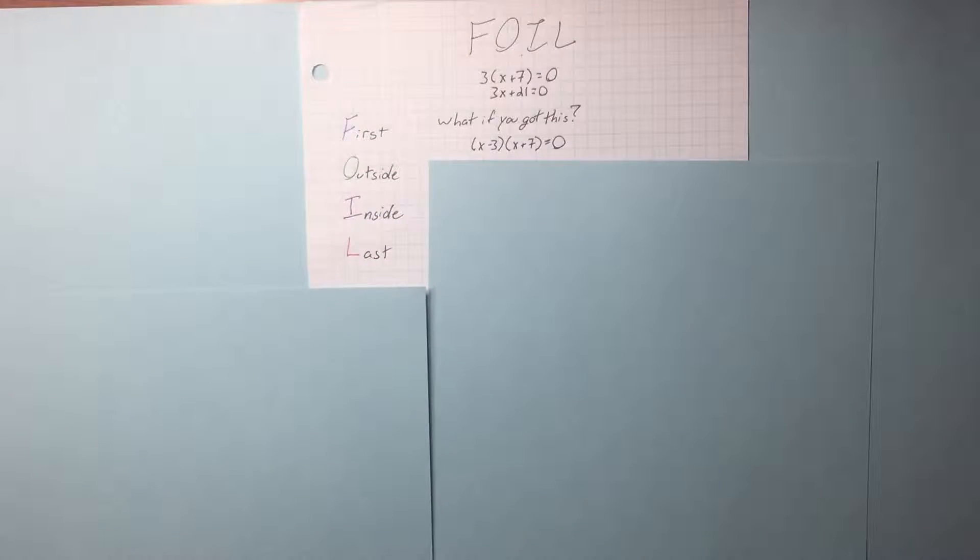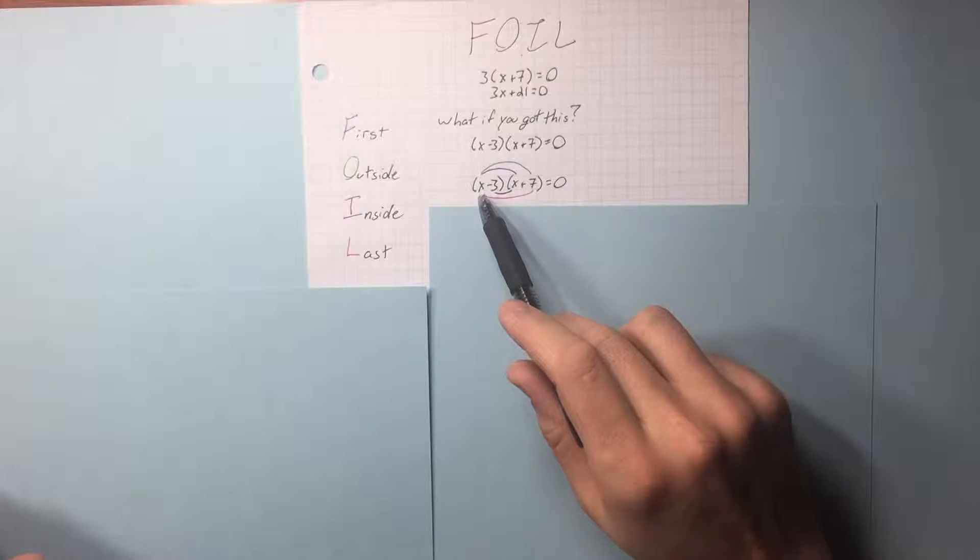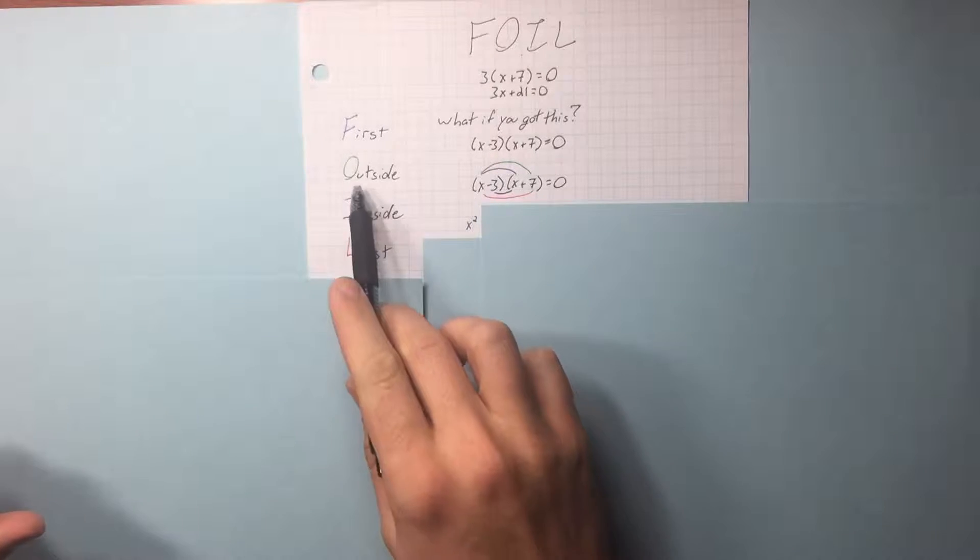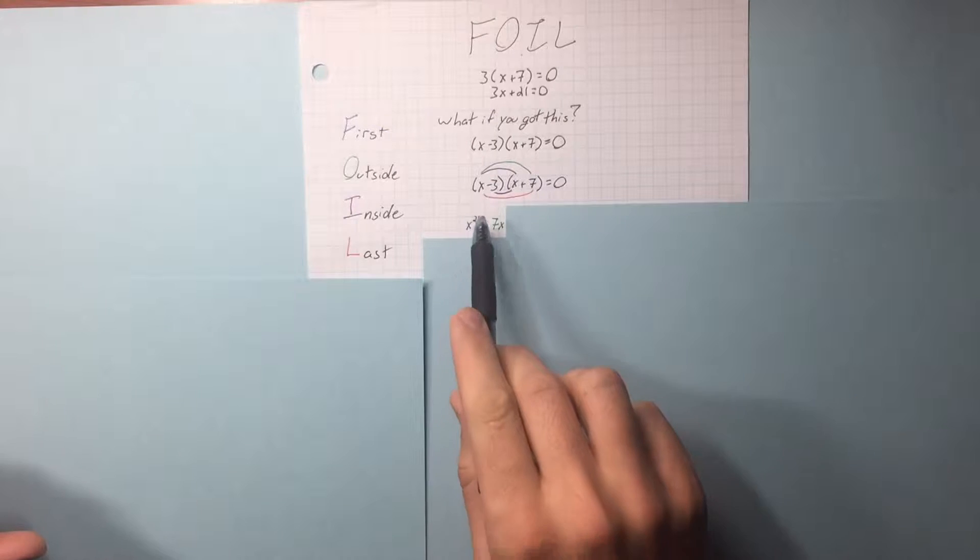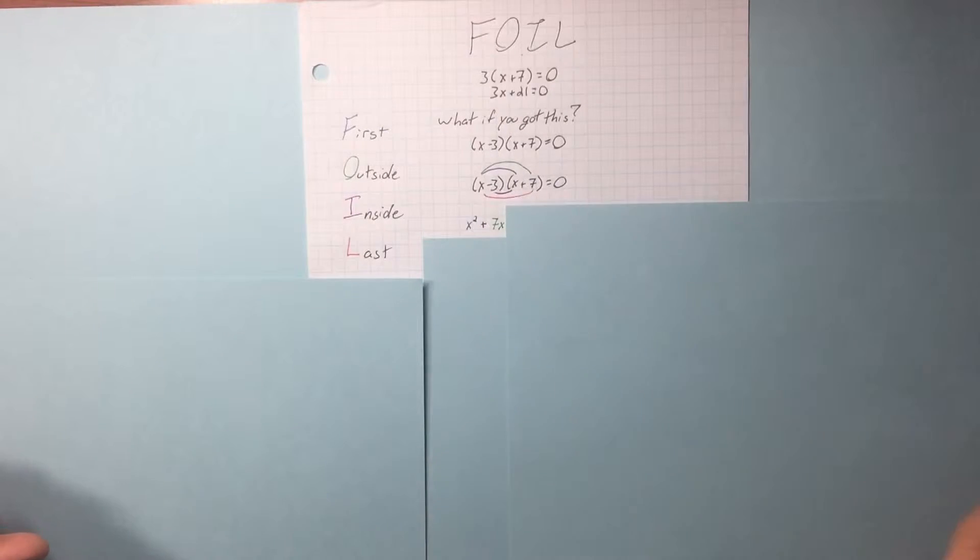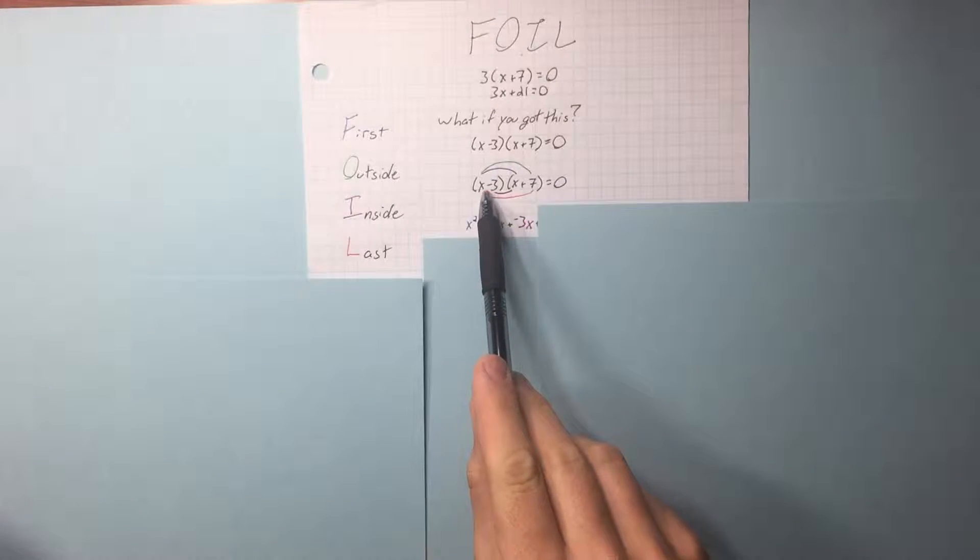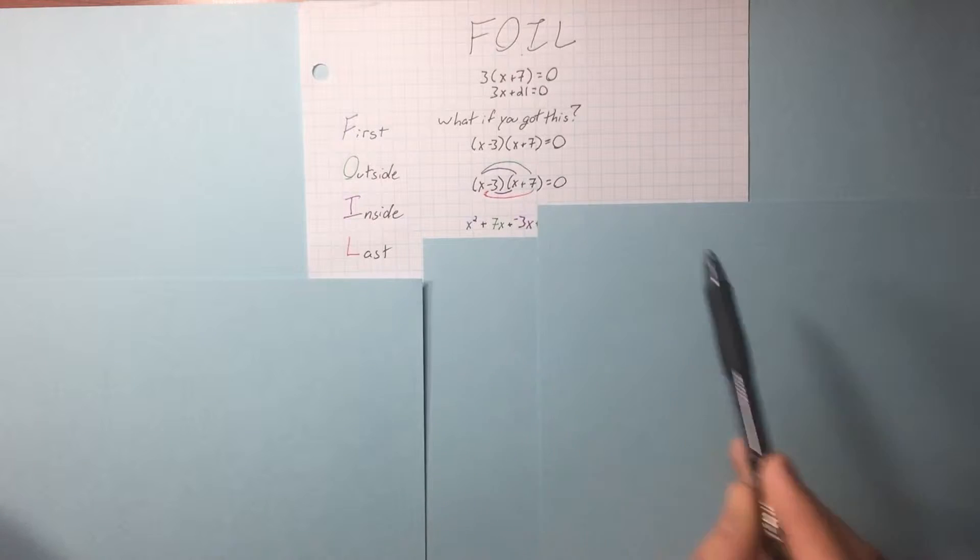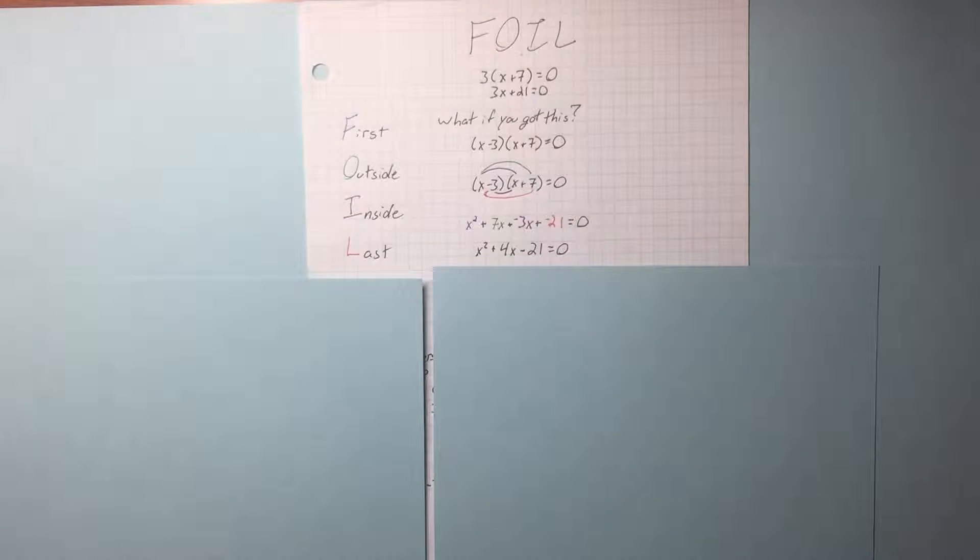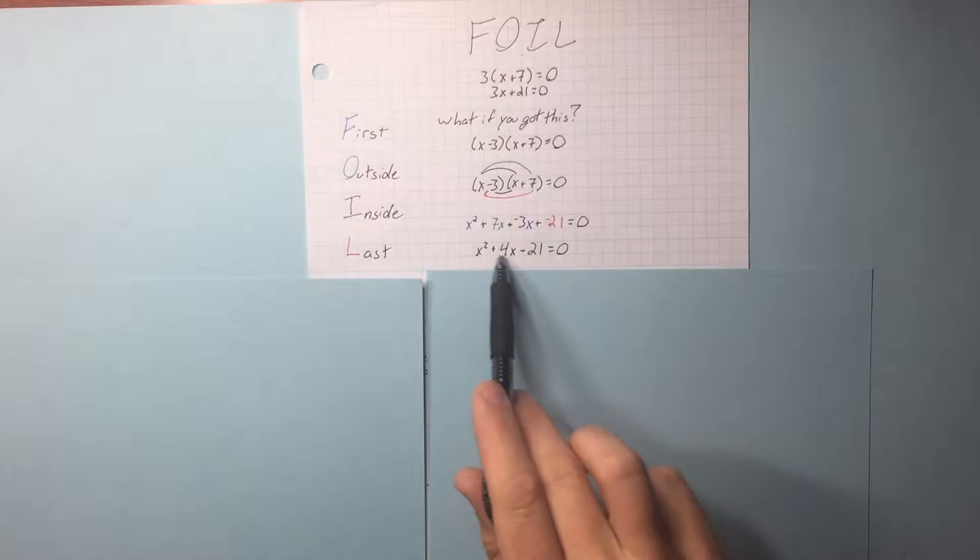The distribution for this is called FOIL. First, you multiply the x times the x, x squared. Outside, x times the 7, 7x. Inside, minus 3 times x, minus 3x. And last, minus 3 times 7, negative 21. We combine our like terms. Now we have a quadratic equation.